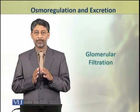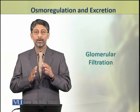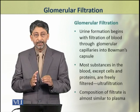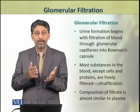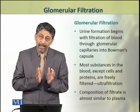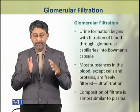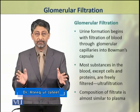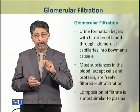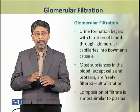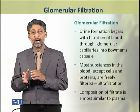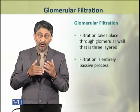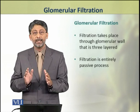In this topic, we shall discuss the process of glomerular filtration in detail. The process of urine formation begins with filtration of blood through the glomerular capillaries into the Bowman's capsule. During this filtration, most of the substances in the blood, except the blood cells and the proteins, are freely filtered — that is, it is a process of ultra-filtration. As a result, the filtrate obtained has a similar composition to that of blood plasma. This filtration takes place through the glomerular wall, which is three-layered and is entirely a passive process.